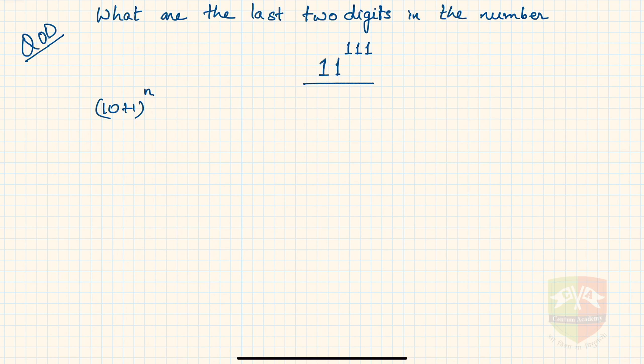Last two digits, for example if 574, the last two digits is 7 and 4. So if we take this example, then let's say if I have to find out...